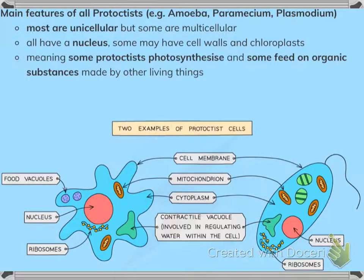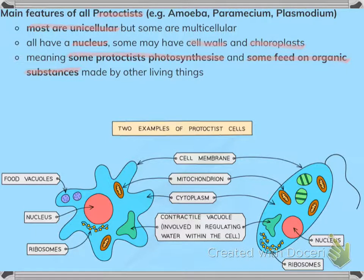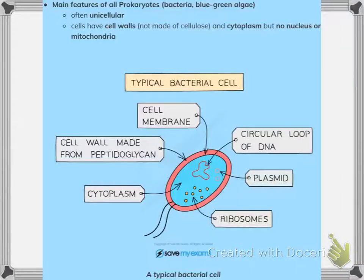Protoctists are unicellular and have a nucleus. Some protoctists have cell walls and chloroplasts and can photosynthesize; others feed on organic substances made by other living organisms.